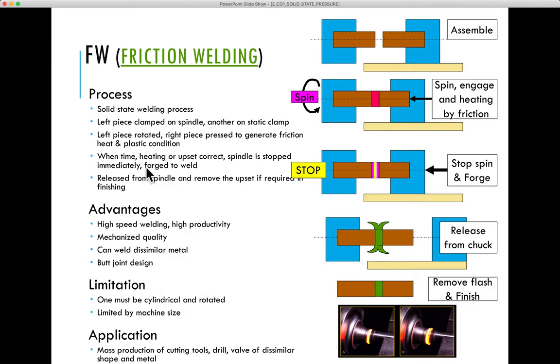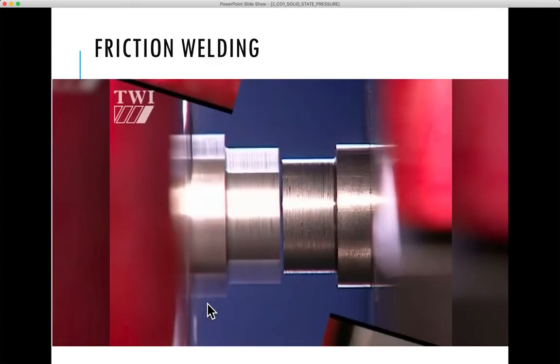The limitation of inertia friction welding is basically that it is limited by the machine size and one of the parts should be cylindrical. We are going to see one video and one example of how this friction welding process occurs.